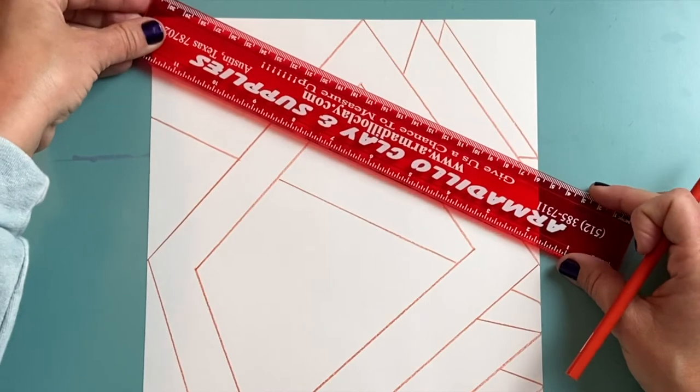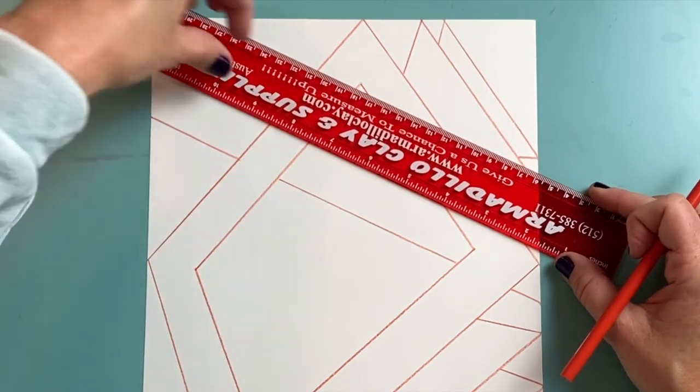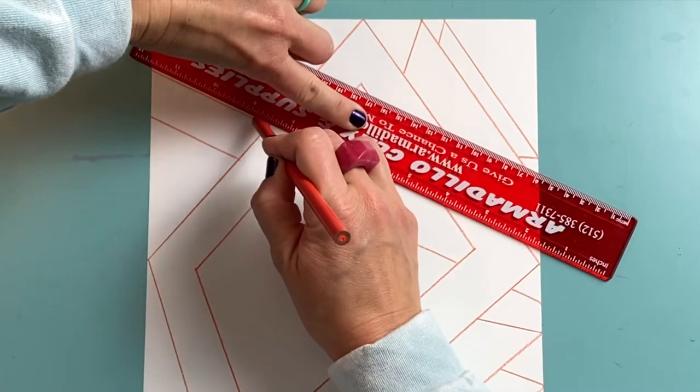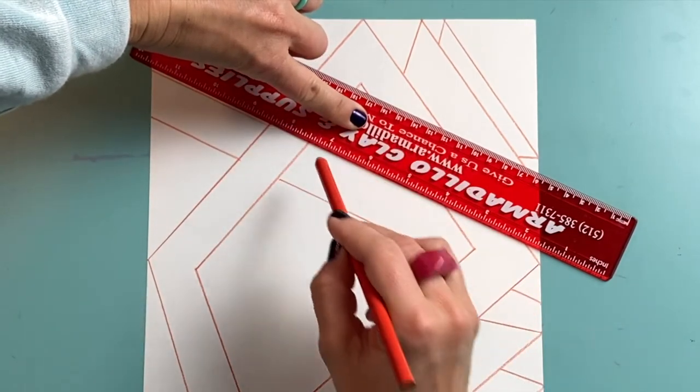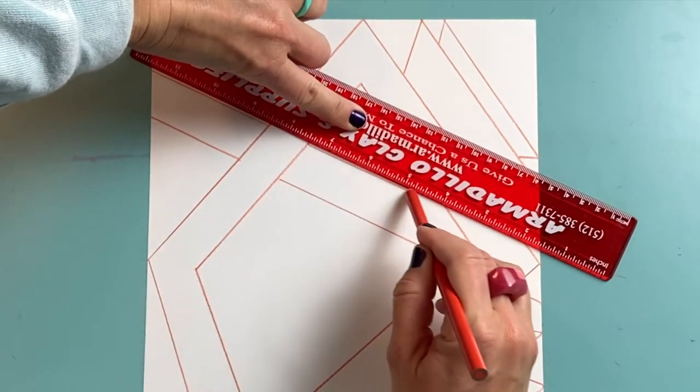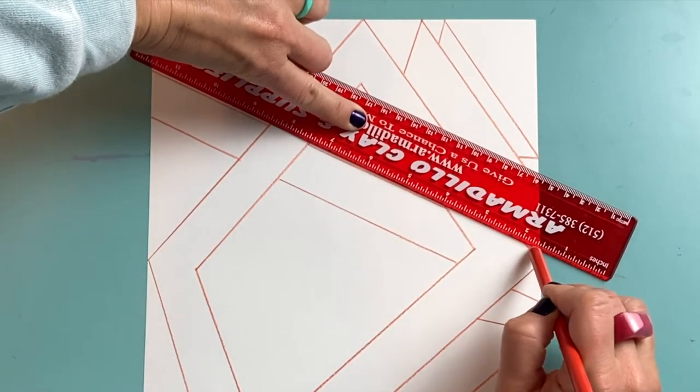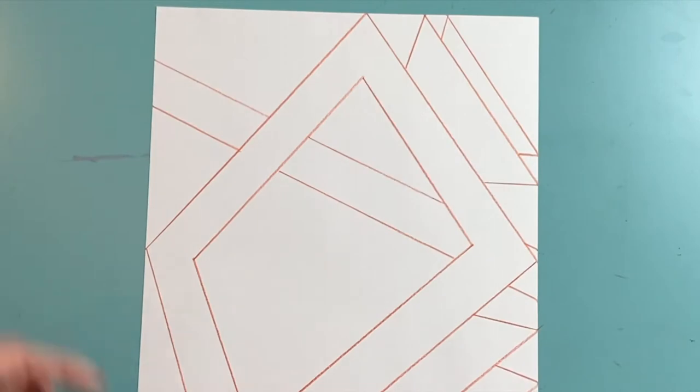I'm going to do that again. I'm going to make another line. Hold my ruler down, draw my line, and stop, hop, draw, stop, hop, and draw the rest of that line. So now that line looks like it's going back behind my big quadrilateral.